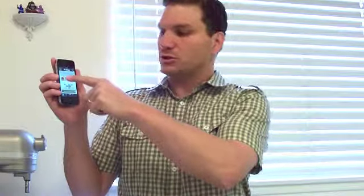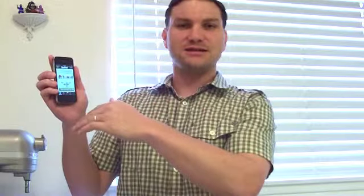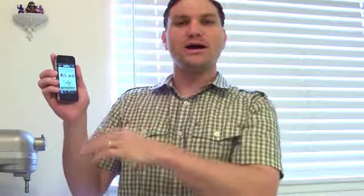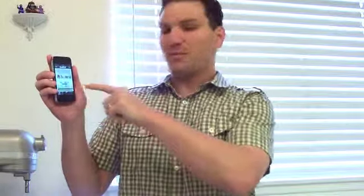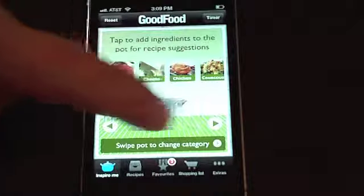When you open the app, it's actually really clever. It comes across with a whole list of ingredients that give you thumbnails across the top. It's got beef and cheese and chicken and couscous. What you can do is you tap one of these, and they fly into the pot below, and it will then give you how many recipes are available with that combination.